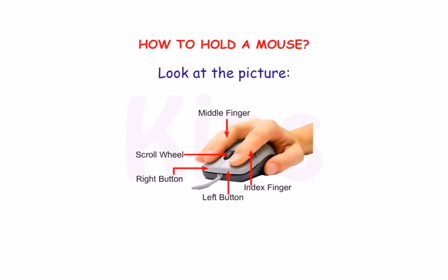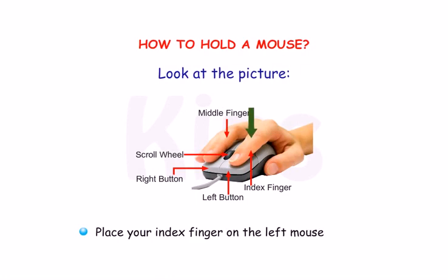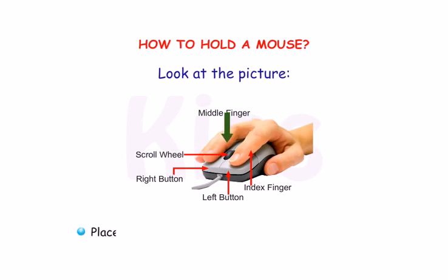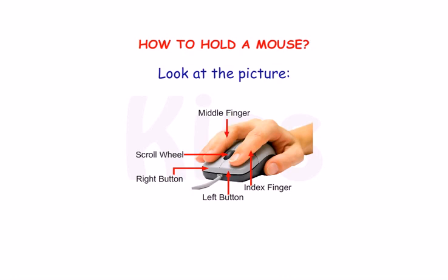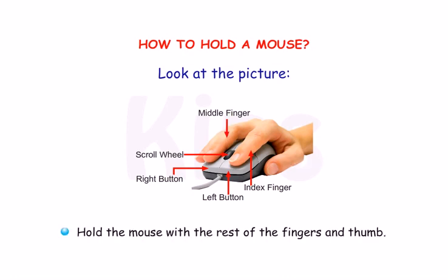Let us learn how to hold a mouse. Look at the picture now. Place your index finger on the left mouse button. Place the middle finger on the right mouse button. Hold the mouse with the rest of the fingers and thumb.